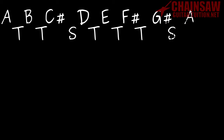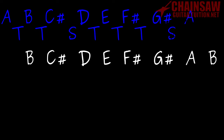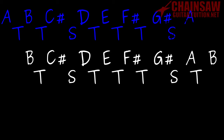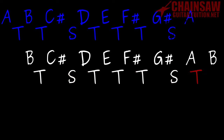But then, if we look at the B Dorian mode, we actually have B, C sharp, D, E, F sharp, G sharp, A, B. Which, yes, is the same set of notes, but look at what's happened to the distances between those notes. We're now starting off with a tone, then we've got a semitone, then three tones, then a semitone, then a tone. This makes a different scale.